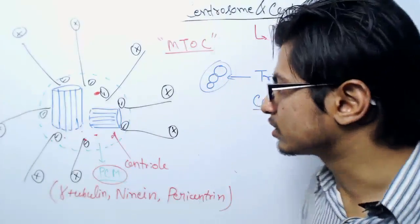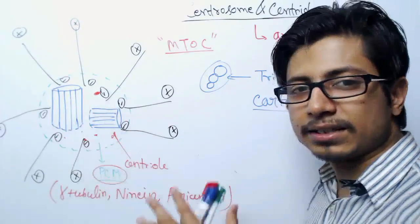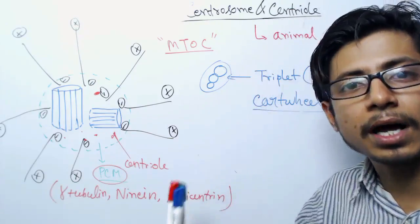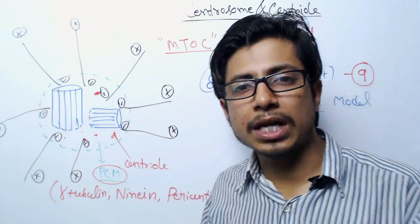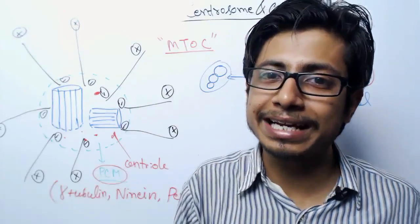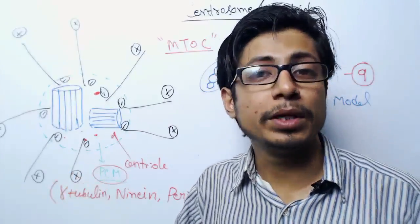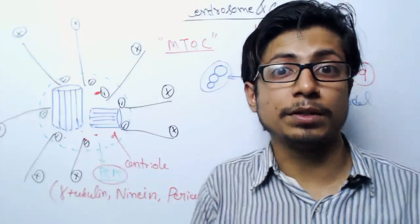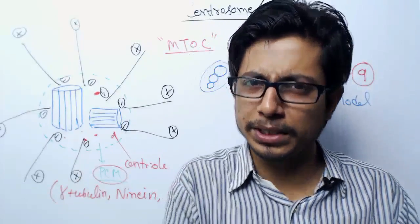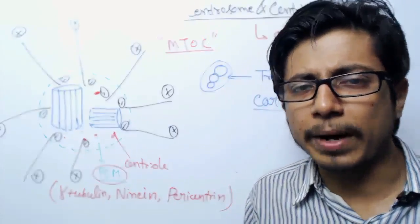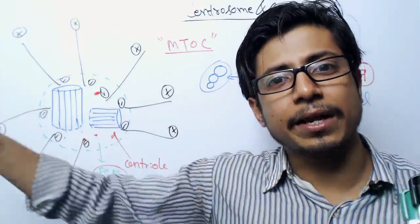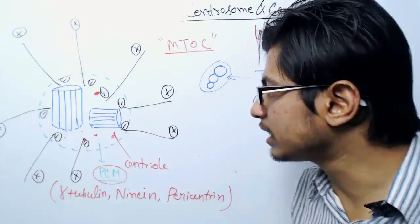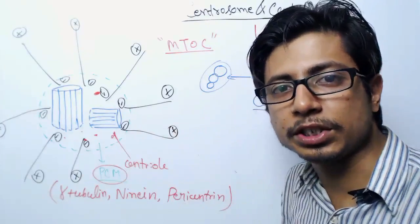Centrioles are barrel-like structures made with microtubules. Microtubules are structures of the cytoskeleton made with tubulin proteins — tubulin dimers. There are different types of tubulin proteins like alpha-tubulin and beta-tubulin. Those tubulins combine together and once they are polymerized like a chain, they form microtubules.